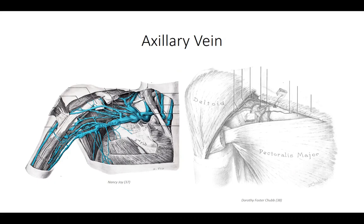The veins of the brachium travel in the same pattern as the arteries and carry the same names. Veins in the appendages tend to travel in pairs, bilateral to the arteries. This vascular arrangement — a single artery traveling between two veins — is known as venae comitantes. The arrangement allows for the pumping of blood back to the heart during each pulse beat. We also see the laterally oriented cephalic vein and the medially oriented basilic vein superficially. The basilic vein penetrates the fascia of the brachium medially, fusing with the brachial vein at the level of the axillary vein.